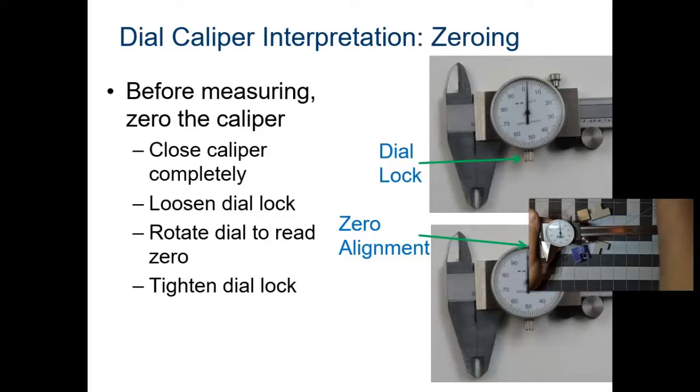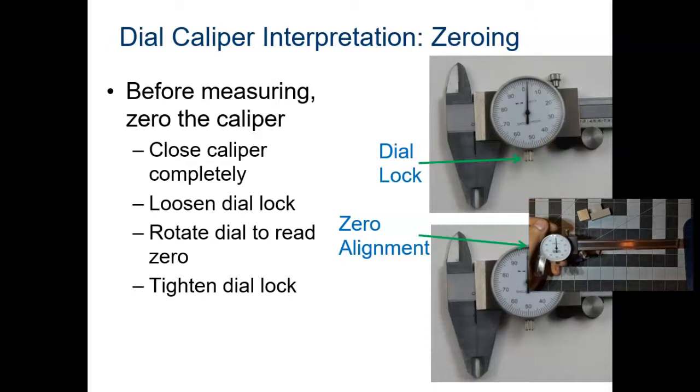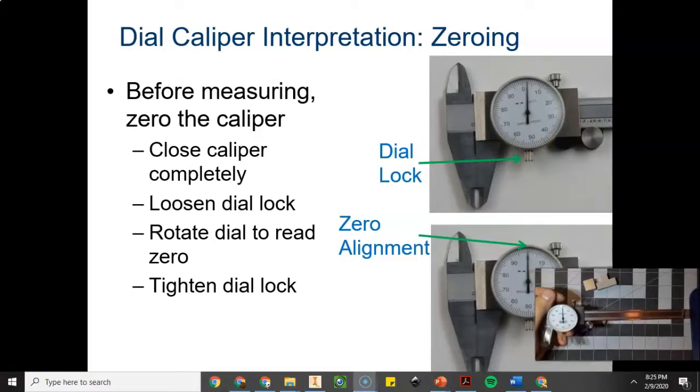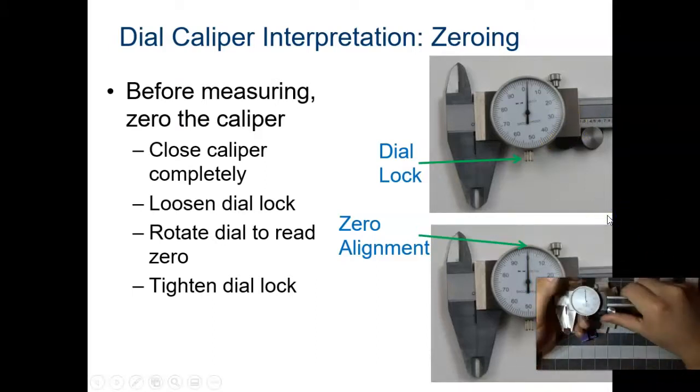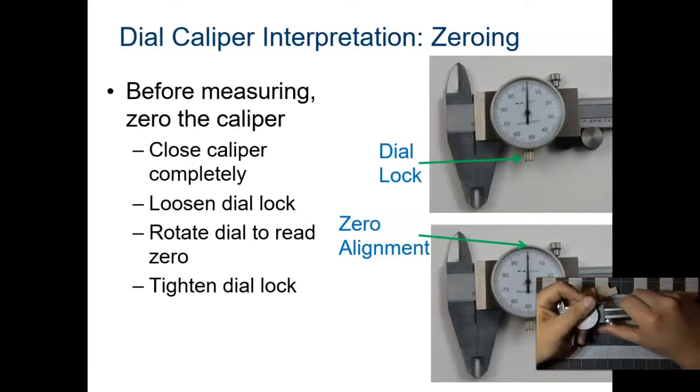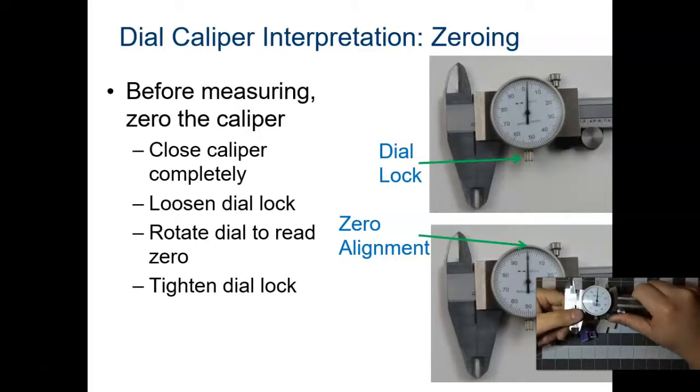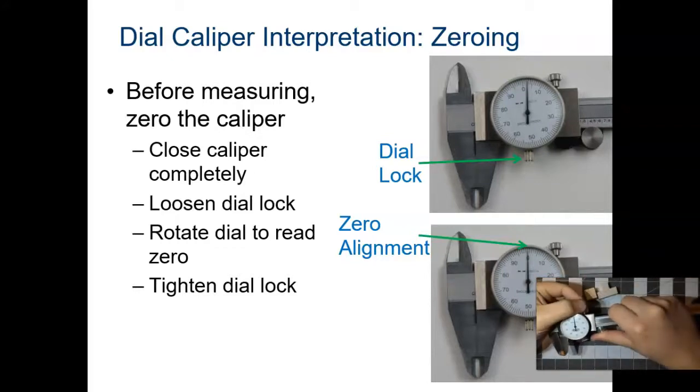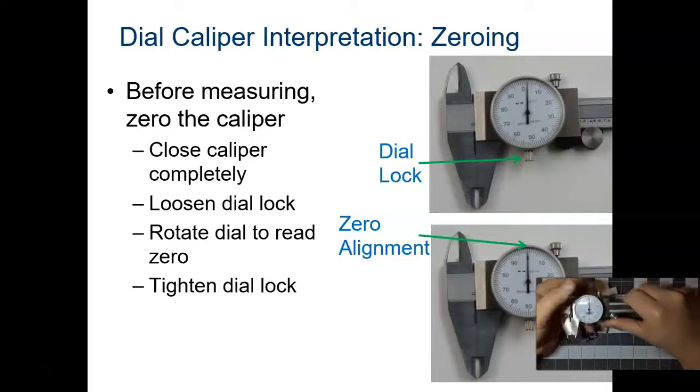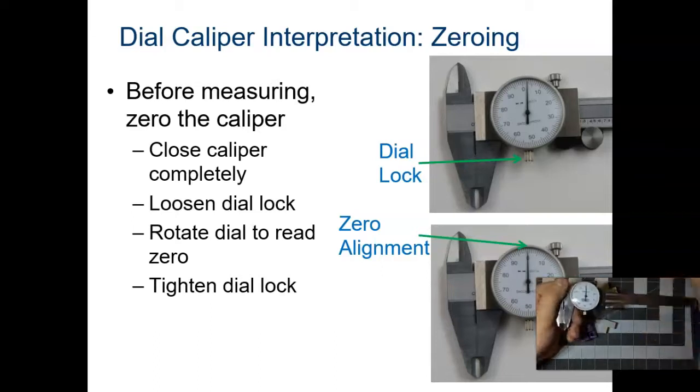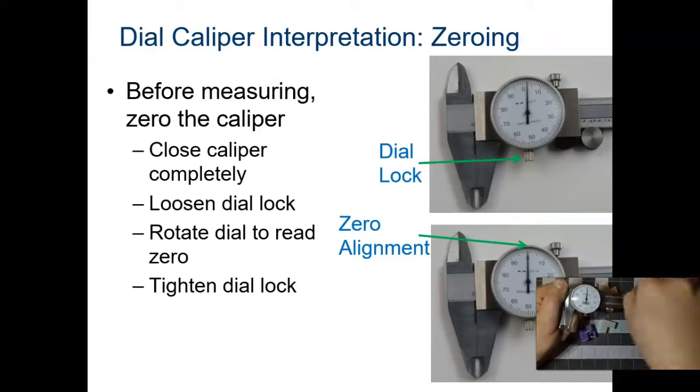So before measuring anything, you need to make sure that your dial pointer is at the zero mark. You're going to close your dial caliper, loosen the dial lock. The dial lock's underneath. And make sure that your dial pointer is on zero. It might be somewhere else. It might not always point straight up.